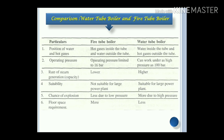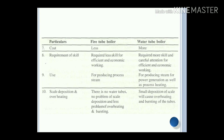Floor space requirement: in a fire tube boiler, it is more; in a water tube boiler, it is less. Cost: fire tube boiler has lower cost; water tube boiler has higher cost. Requirement of skills: in a fire tube boiler, less skill is required; in a water tube boiler, higher skill is required. As per use: fire tube boiler produces process steam, while water tube boiler produces steam for power generation as well as process heating. Scale deposition and overheating: in a fire tube boiler, there are no water tubes, so no problems of scale deposition and less problem of overheating and bursting. In a water tube boiler, even small deposition of scale can cause overheating.